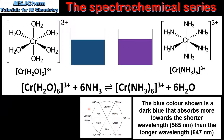We can confirm this using the color wheel. The solution on the left is absorbing orange light and transmitting the complementary color which is blue. The solution on the right is absorbing yellow light and transmitting the complementary color which is violet. Yellow light has a shorter wavelength than orange light, so the complex ion on the right absorbs light of a shorter wavelength than the complex ion on the left. This is because ammonia is a stronger field ligand than water.